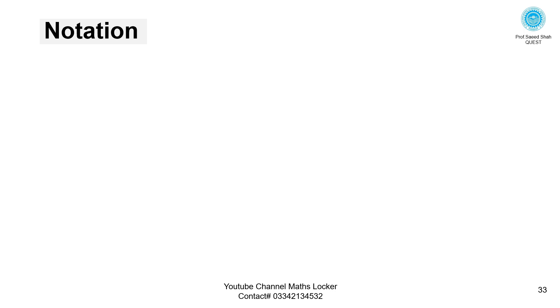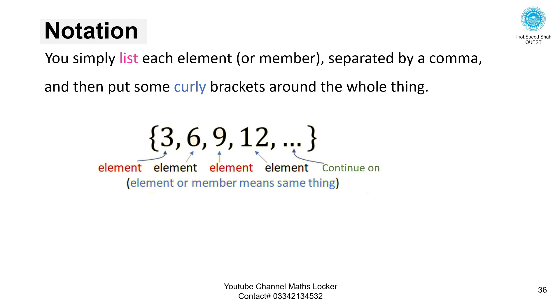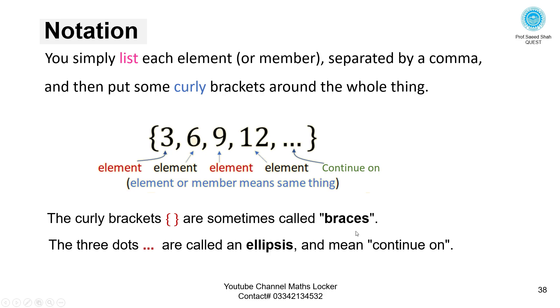Notation. You simply list each element or member separated by a comma, and then put curly brackets around the whole thing. Here are elements which we can write as a list. Here we can see that three, two, six separated by commas. These three dots are called an ellipsis and mean continue on.